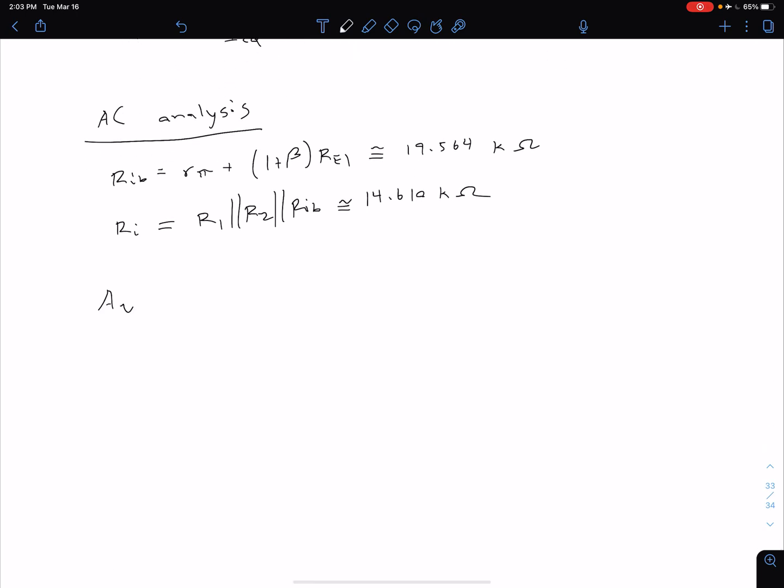We then go to our small signal voltage gain equation, negative beta Rc. So beta was 120 divided by Rib times Ri divided by Ri plus Rs. We've changed our Ri and our Rib. The other three values are going to be the same. If we plug everything in, we see that this is approximately negative 33.212. That is still a lot smaller than that negative 170 that we saw with no emitter resistor.